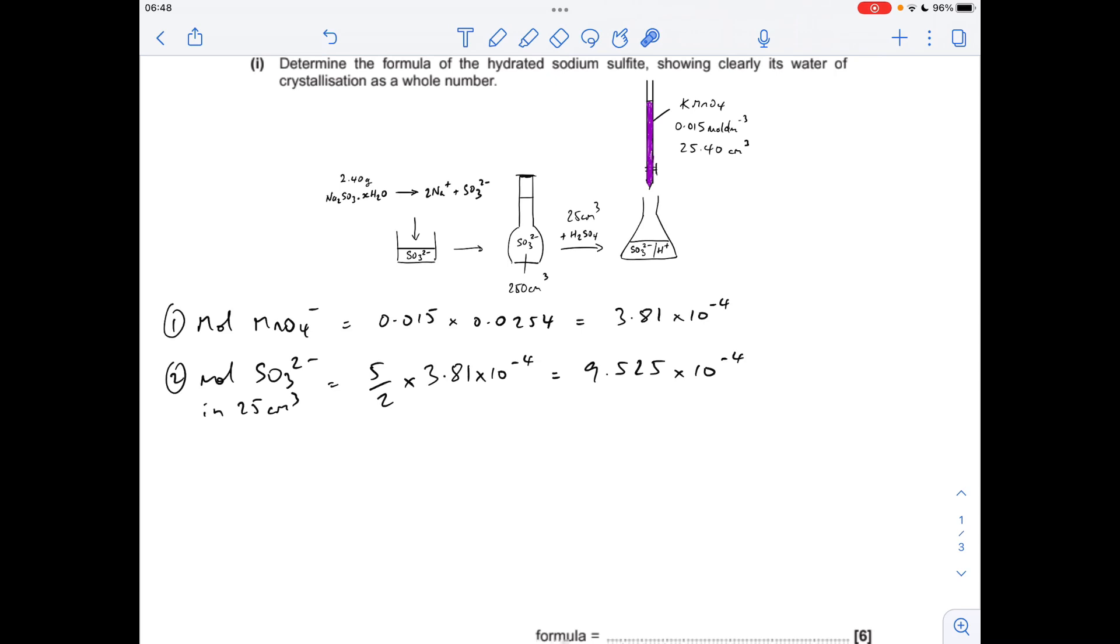Next thing we apply that mole ratio to find the moles of sulfite ions in the 25 cm³. So 5 over 2 times that 3.81 times 10 to the minus 4 gives 9.525 times 10 to the minus 4.